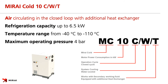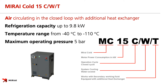The smallest closed cycle machine is Mirai Cold 10T. The difference in the nomenclature is two letters: C stands for closed cycle, and T on the end stands for the machine being equipped with the additional heat exchanger from the factory. Cooling capacity of Mirai Cold 10T is up to 6.5 kW and maximum operating pressure is 4 bars. The newest addition is the medium closed cycle machine Mirai Cold 15T, with cooling capacity up to 9.8 kW and maximum operating pressure of 5 bars — and the best feature is that the size is identical to MC 10T but provides more than 50% higher cooling capacity.